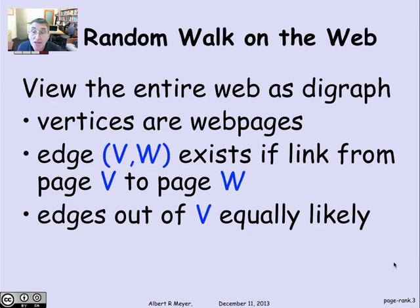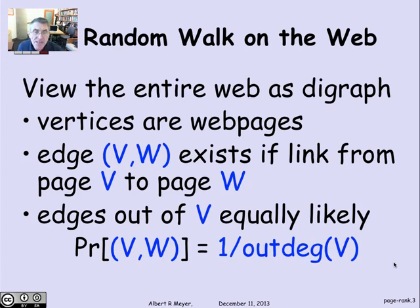That is the model of the World Wide Web as a random walk graph. So to be more precise, the probability of the edge that goes from V to W is 1 over the out degree of V. That is, all of the out degree of V edges leaving vertex V get equal weight.